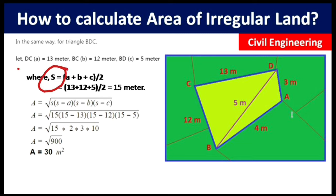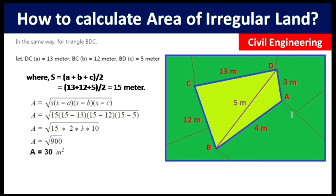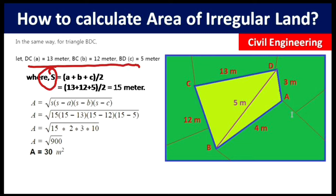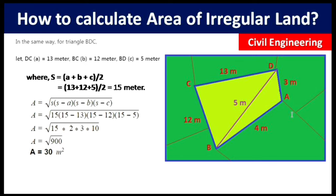Now, applying Heron's formula: A = √(s·(s−a)·(s−b)·(s−c)). Putting in all the values, we get A = √900 = 30 square meters. This is the area of triangle BDC.